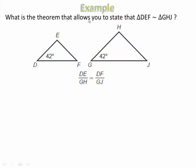Okay, what is the theorem that allows us to state that triangle DEF is similar to triangle GHJ? We see that angle D has the same measure as angle G. Then they're telling us that they're proportional. They're telling me that these two angles right here are congruent. This proportion down here tells me that DE is proportional to GH and it's also telling me that DF is proportional to GJ.